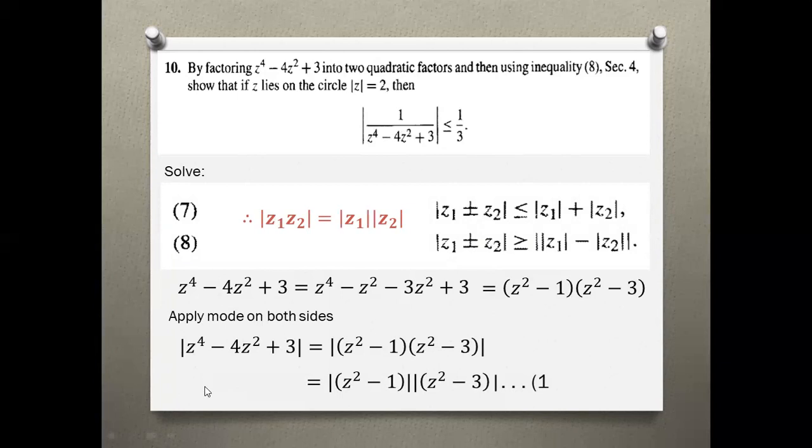Now what do we have to do? We have these parts as z squared minus 1 and z squared minus 3.